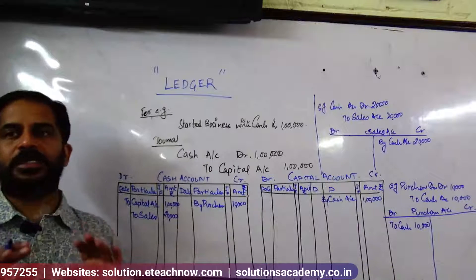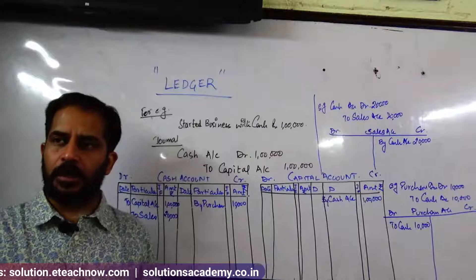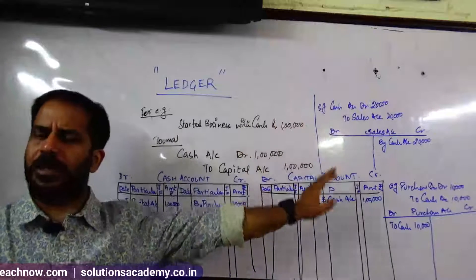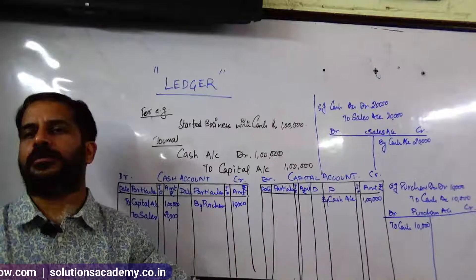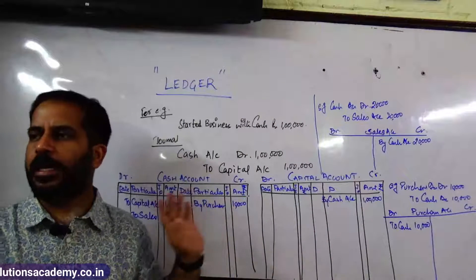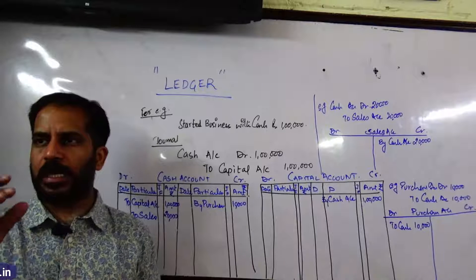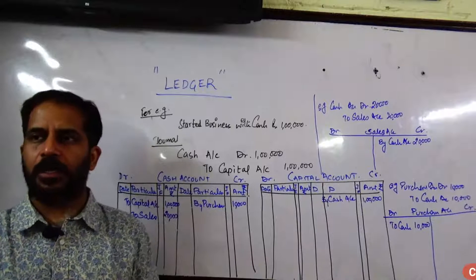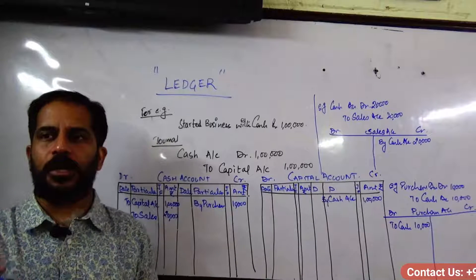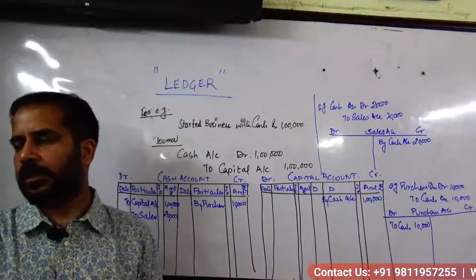Now, the last step is ledger posting. This is the way you have to do it. If you need to understand three things — cash account debit, discount account debit, sales account — then this is how you do it.